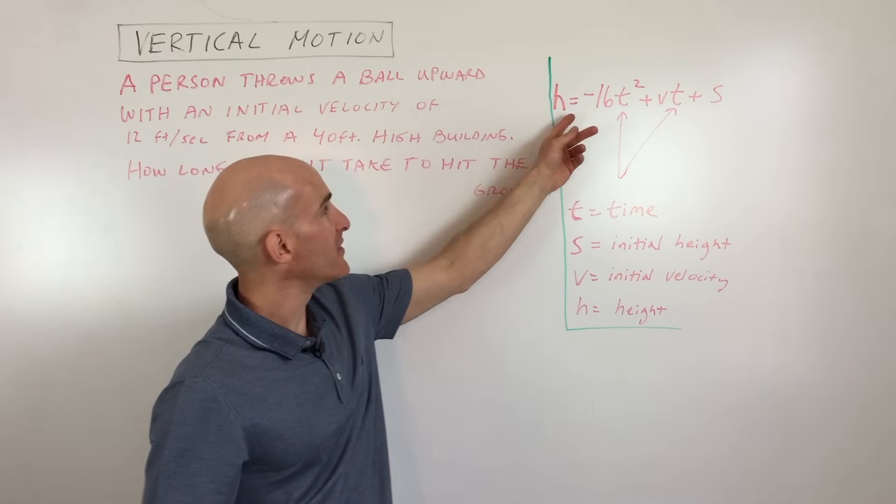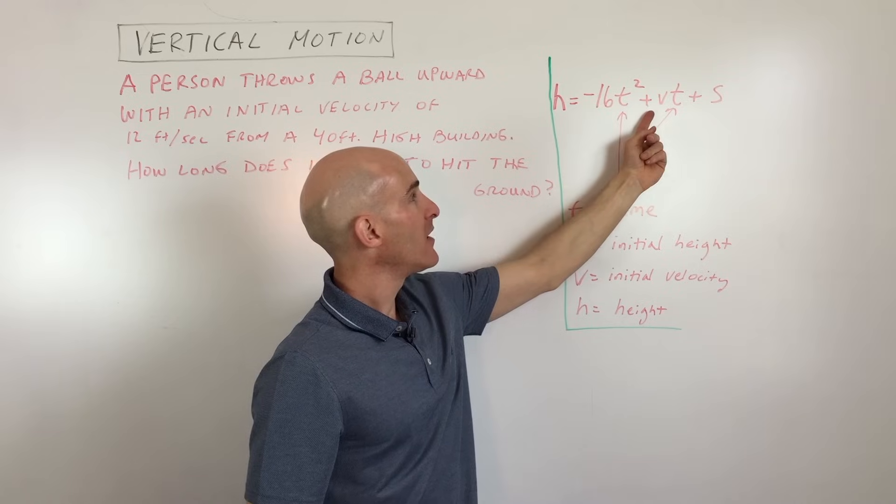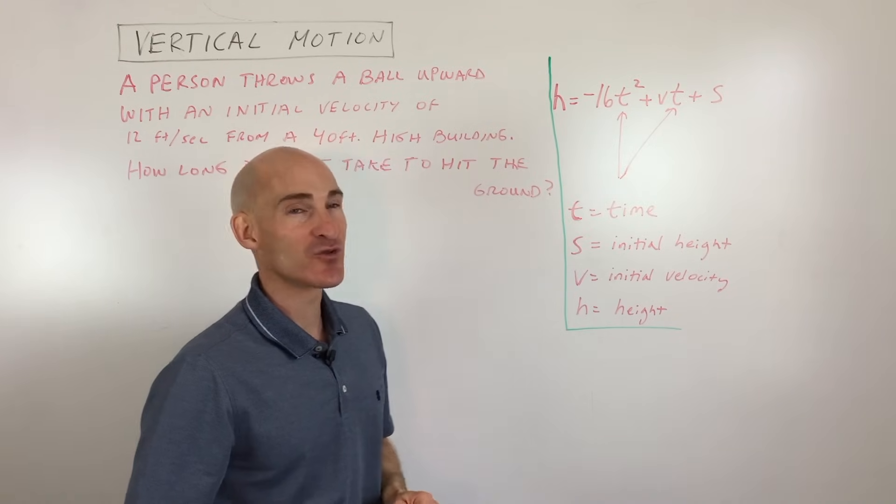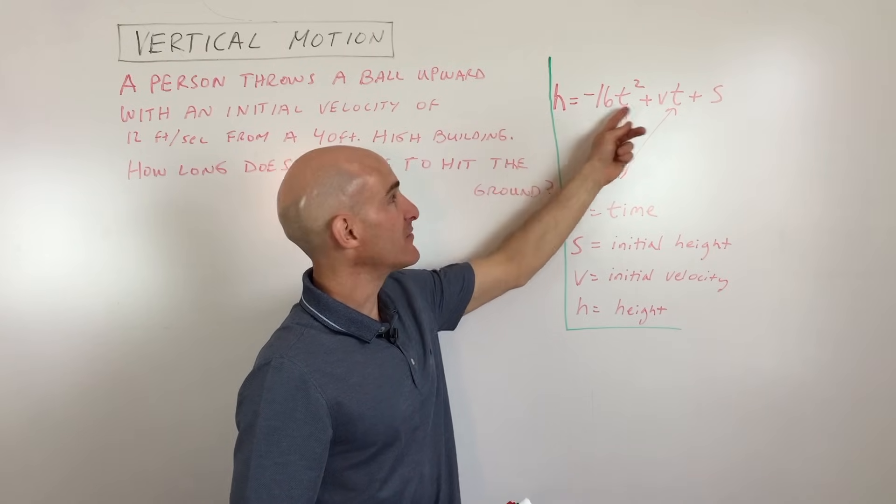So the form that we're going to be working with is h equals negative 16t squared plus v times t plus s. What do all those variables represent? Well, the height, h is the height at any given time, t.